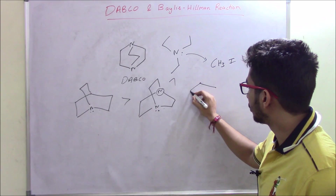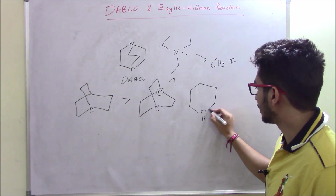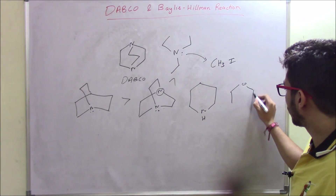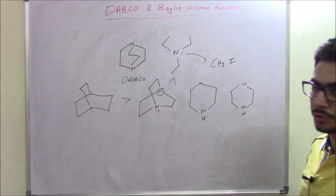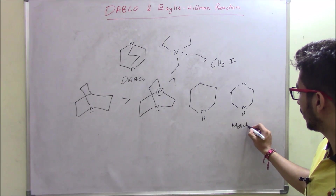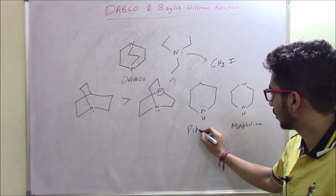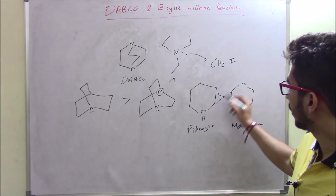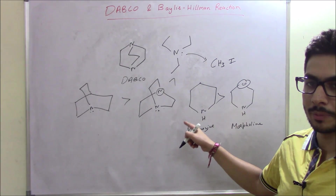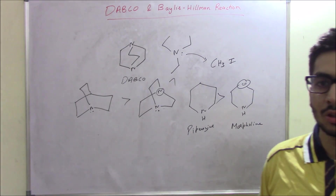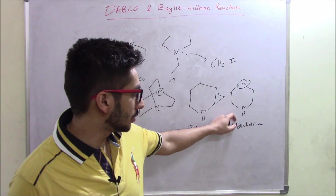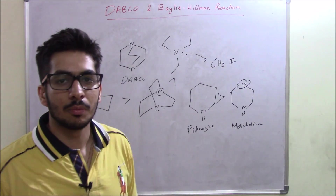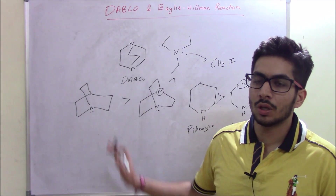On a similar concept, consider which is more basic: piperazine or morpholine. Piperazine is a six-membered saturated compound with two nitrogens, while morpholine is a six-membered heterocycle with both nitrogen and oxygen. Piperazine is more basic because in morpholine, the oxygen pulls electrons through the inductive effect, making the lone pair on nitrogen less available for donation.